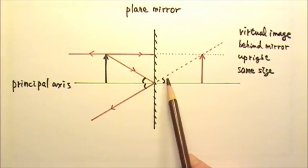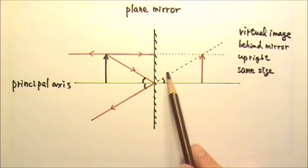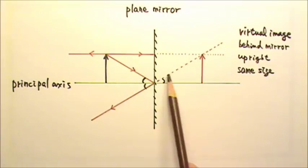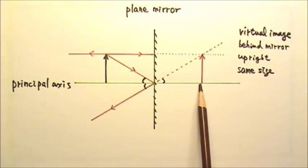Therefore, these two angles are the same. If we look at these two right triangles, we can see that they are congruent. This means these two distances are the same.